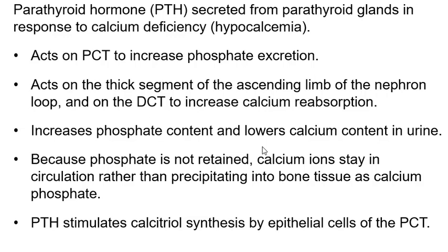If you want calcium to go into your bones to build them up, you need phosphate. But because parathyroid hormone told you to pee out phosphate, the calcium will stay in your bloodstream rather than going into the bones. Calcium needs phosphate to go into bones — but you just peed it out. So this increases the amount of calcium available in your bloodstream.